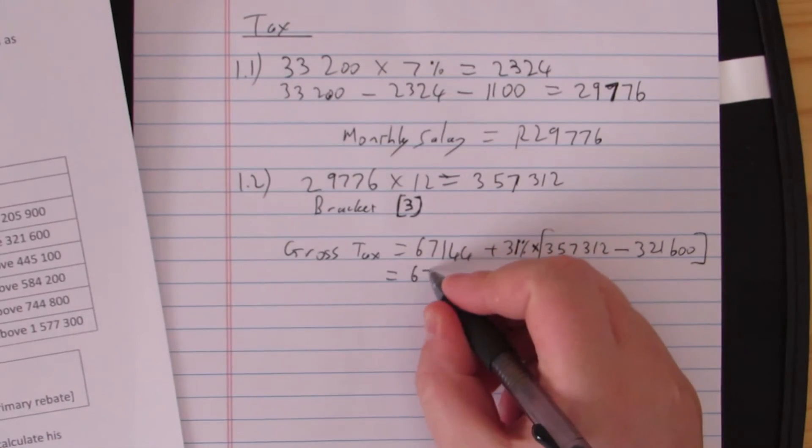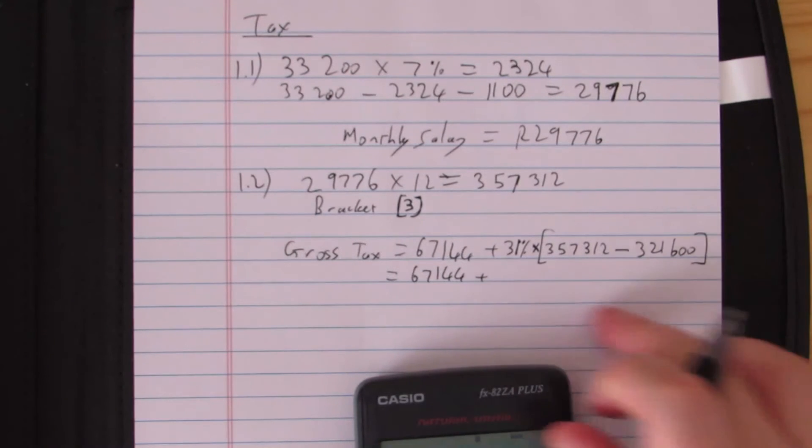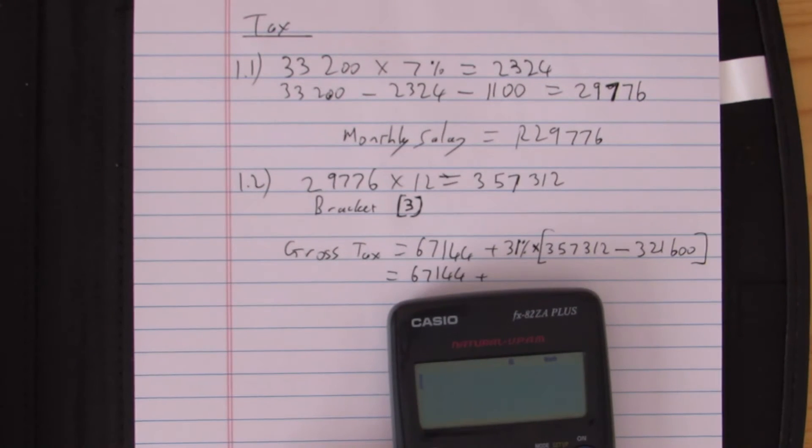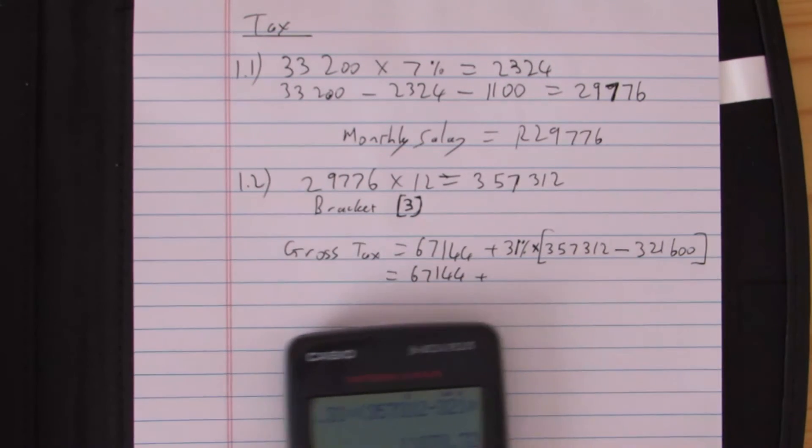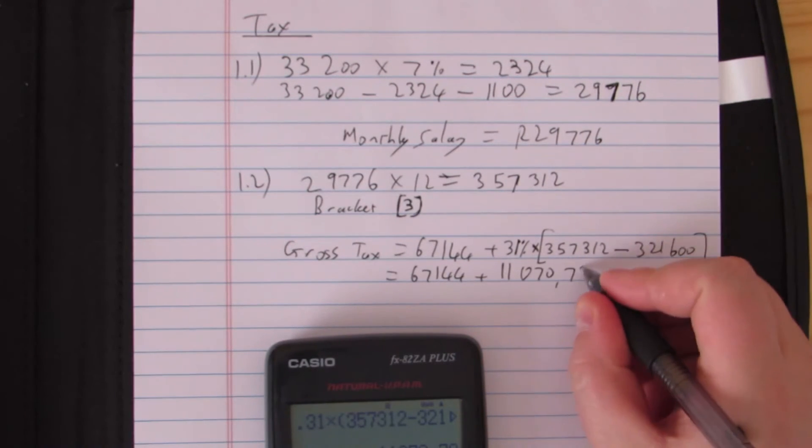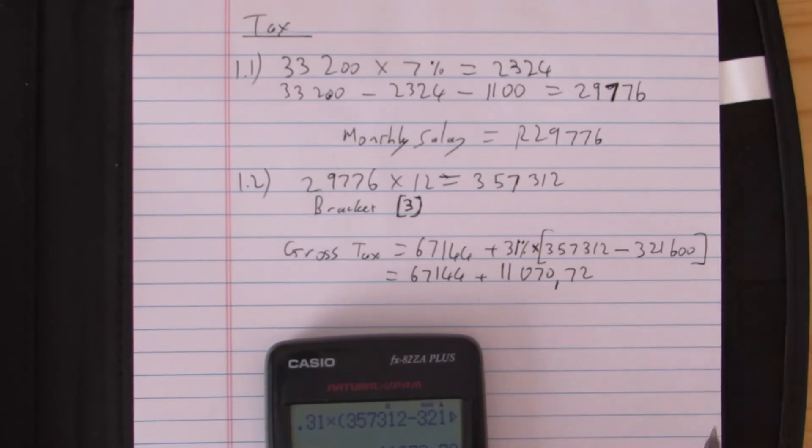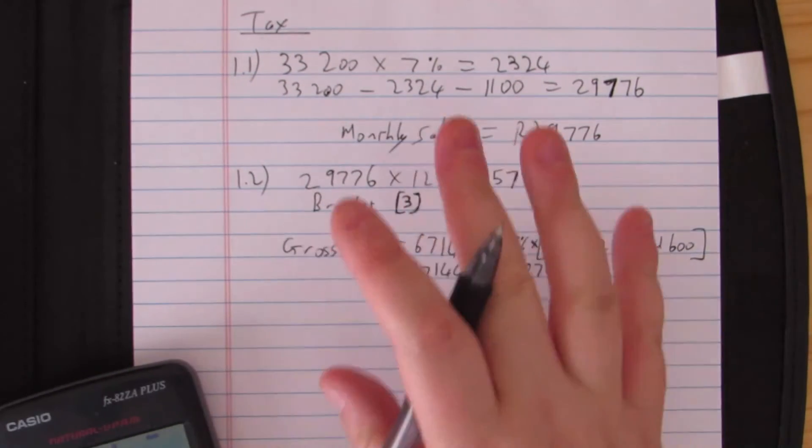We're only taxing the amount that they earned over 321,600 at 31%. Very important that we keep that in mind. This amount stays the same, and I always like to work out what this would be. So this is a fairly straightforward one. 31% I always use my decimals here, and then I put in my brackets: 357,312 minus 321,600 because that was the lower end of my bracket. So I'm adding 11,070 rand and 72 cents in tax. We don't round off the cents, we keep it please.